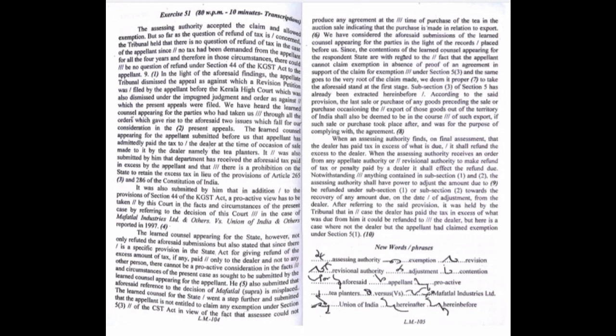We have considered the aforesaid submissions of the learned counsel appearing for the parties in the light of the records placed before us. Since the contentions of the learned counsel appearing for the respondent state are with regard to the fact that the appellant cannot claim exemption in absence of proof of an agreement in support of the claim for exemption under section 5 and the same goes to the very root of the claim made, we deem it proper to take the aforesaid stand at the first stage.